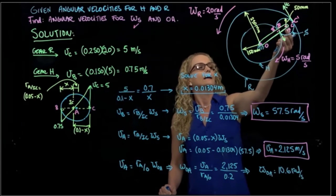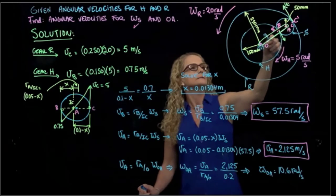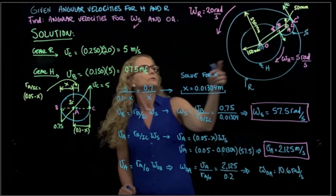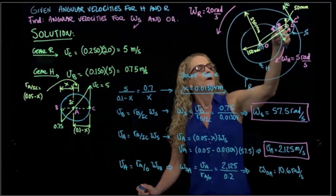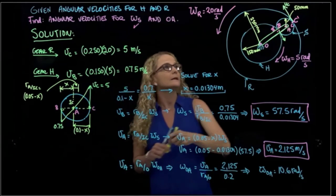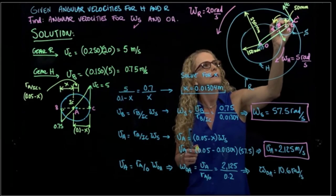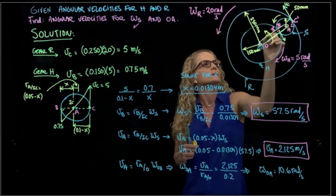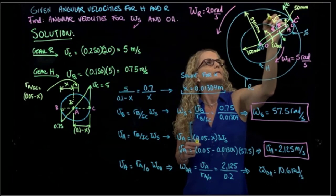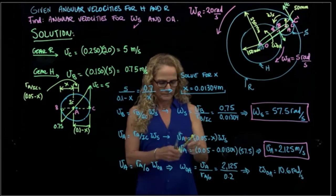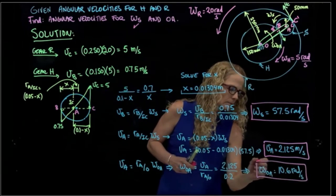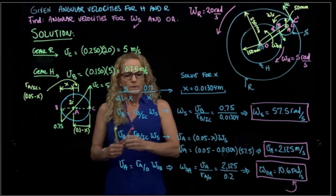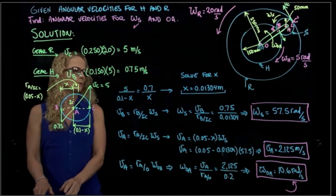Regarding direction: we found that point A moves in one direction, and the angular velocity of gear S is in that same direction. So the velocity of OA and the velocity of S both move in the same direction. That is the solution of this problem.